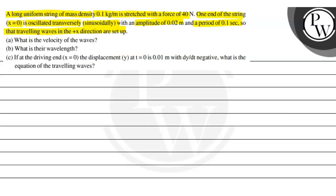So kids, you have to find in the first part what is the velocity of the waves, second part what is their wavelength, and the third part is if at the driving end x equals 0, the displacement y at t equals 0 is 0.01 meter with dy/dt negative, what is the equation of the traveling waves. So we need to solve these three parts.